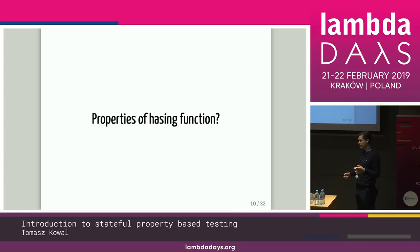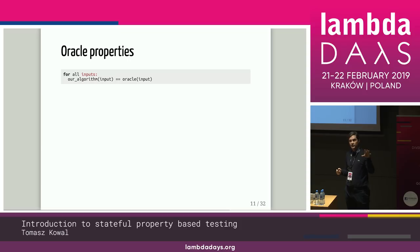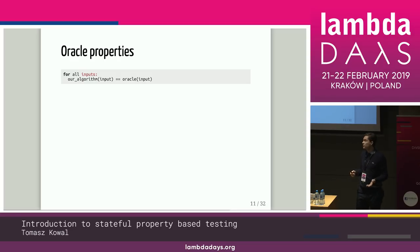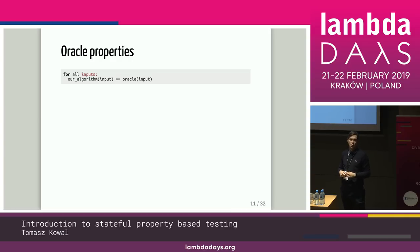With cases where it's very hard to come up with properties, we may use something called Oracle properties. Oracle properties basically say: for all inputs of the tested system, it should give the same output as an Oracle. For a hashing function, we might take OpenSSL and say: test our function, check what OpenSSL returns — if they are the same, then your implementation is probably okay.